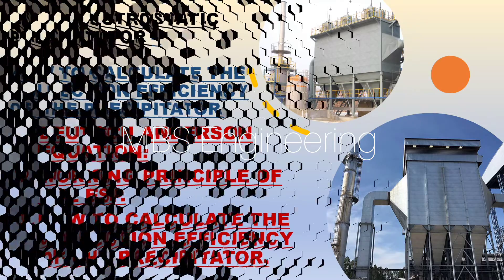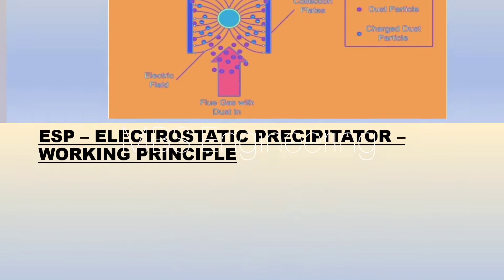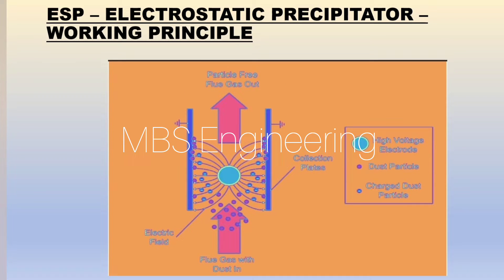First, we understand the working principle of the ESP. An electrostatic precipitator, ESP, is a dust-collecting device that removes particles from a gas stream by using electrical energy to charge particles. A high-voltage system provides power to the discharge electrode to generate an electrical field. The particulate, entrained in the gas, is charged while passing through the electrical field, then attracted to the grounded collector plate, forming a dust layer on the plate.